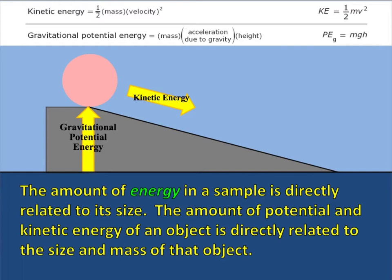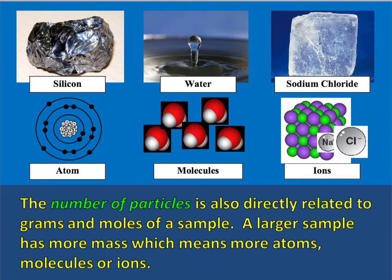The second kind of secondary extensive property is the amount of energy in a sample. If something's moving, it has kinetic energy; if it's just standing still, it has potential energy. But the bigger you are, the more energy you tend to have, so energy is related to size, which makes it an extensive property. The last kind of secondary extensive property is the number of particles in a sample. This is related to grams, which is a measurement for mass, and it's also related to moles. The number of particles is related to the size or the amount of the sample — the larger your sample, the more particles it has; the smaller your sample, the less particles it has.